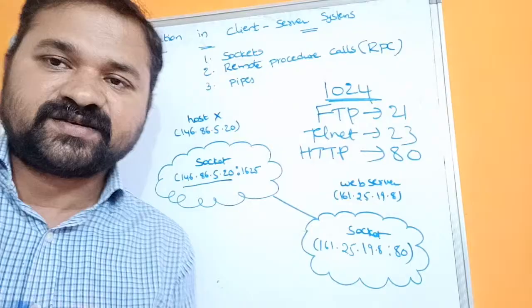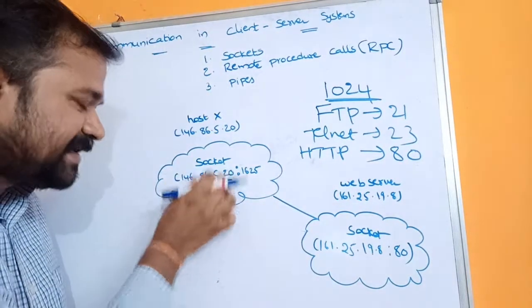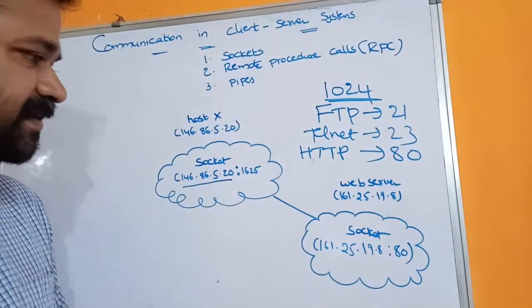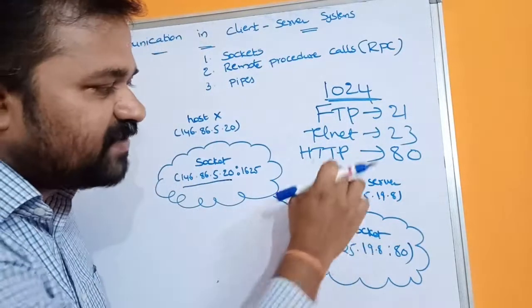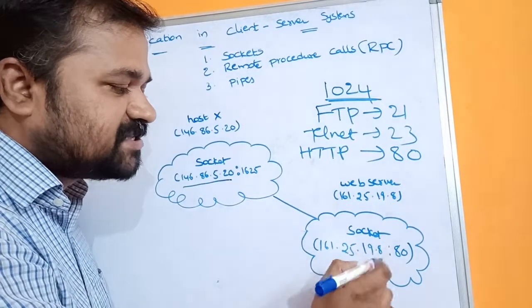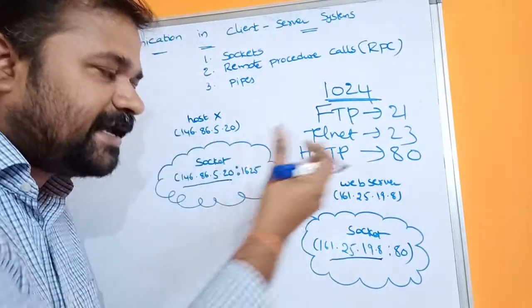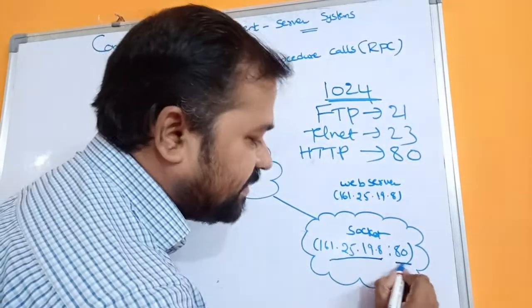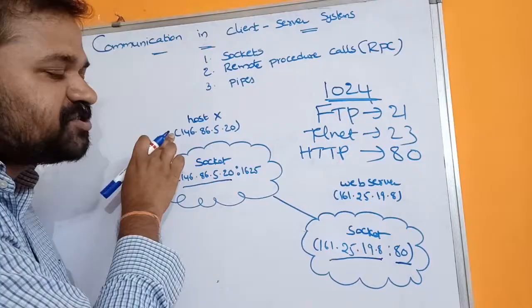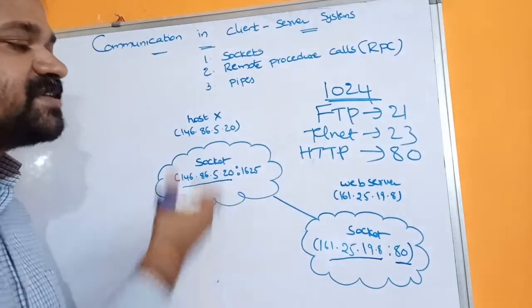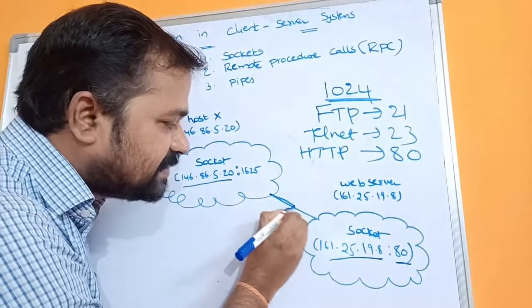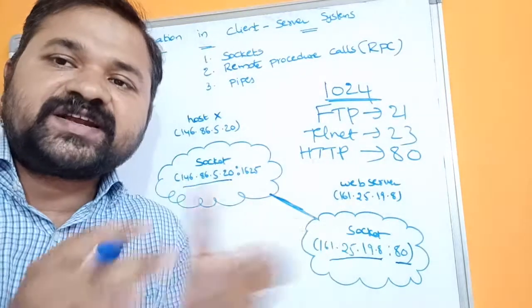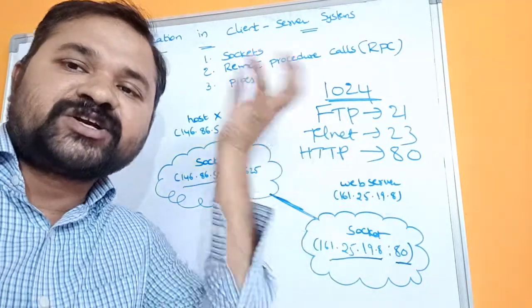The IP address is divided into four parts, and we can write any valid address. The socket created for the web server uses IP address 161.25.19.80. The web server is HTTP, and for HTTP the port number is 80. First, the client machine sends the connection request to the web server using this socket. Whenever the server receives that connection request, it provides the corresponding connection to the client machine.